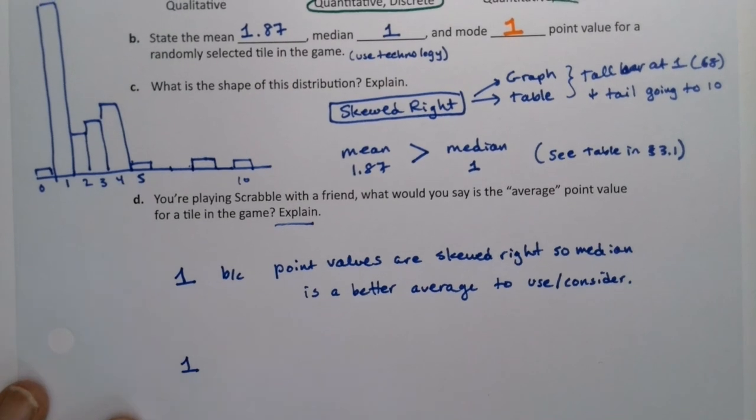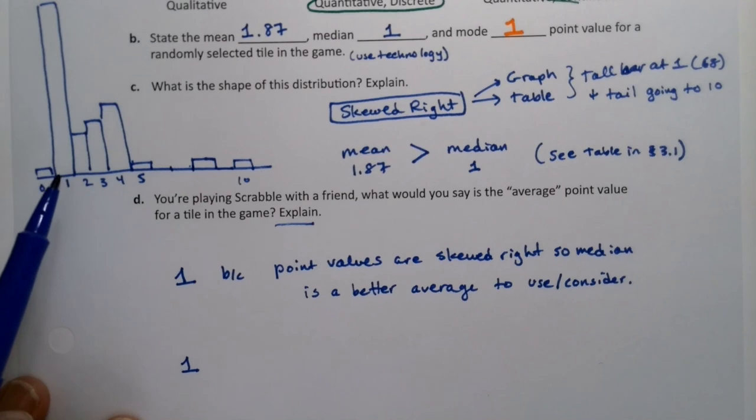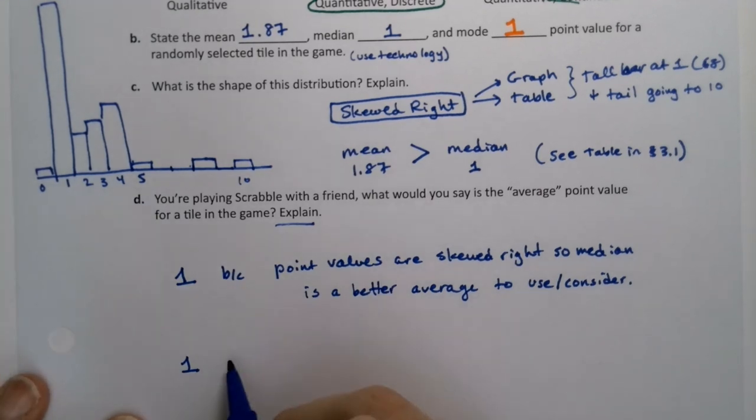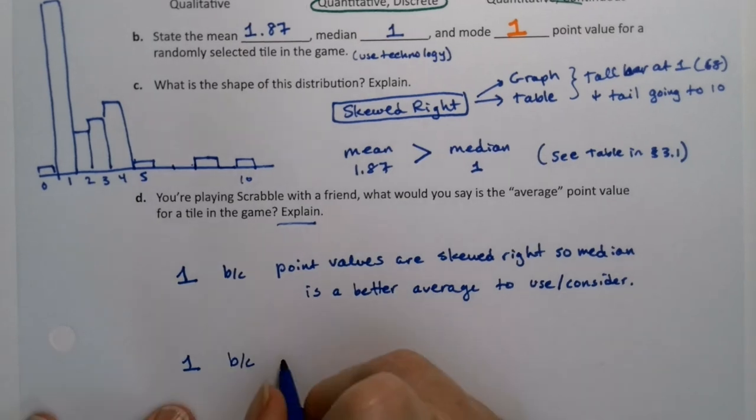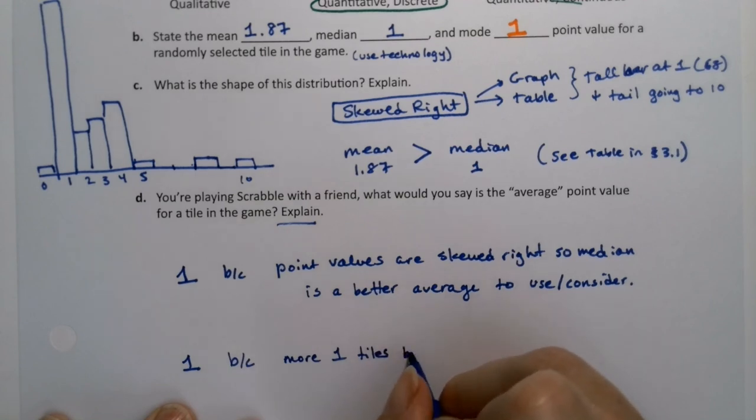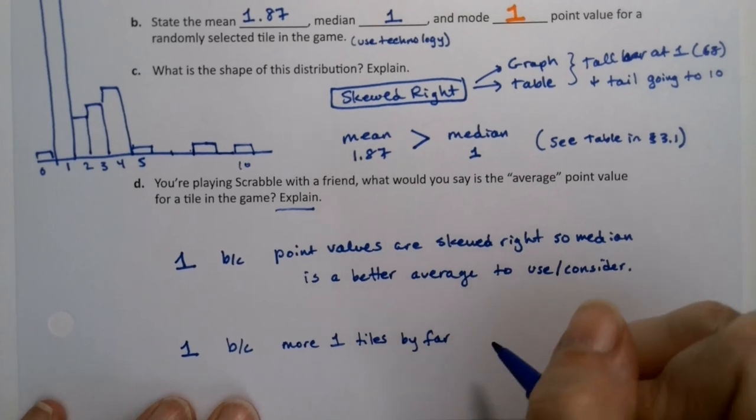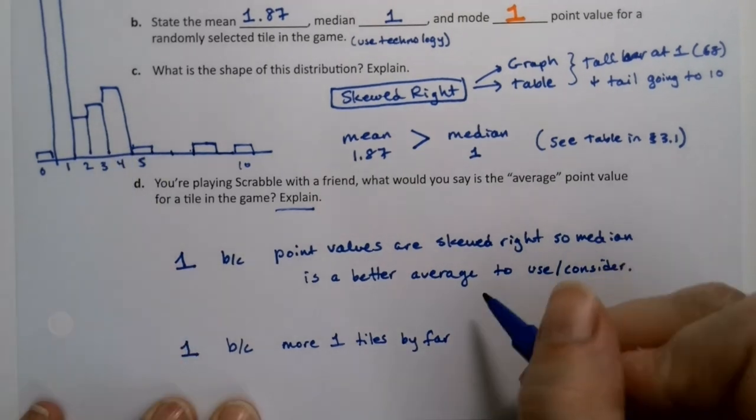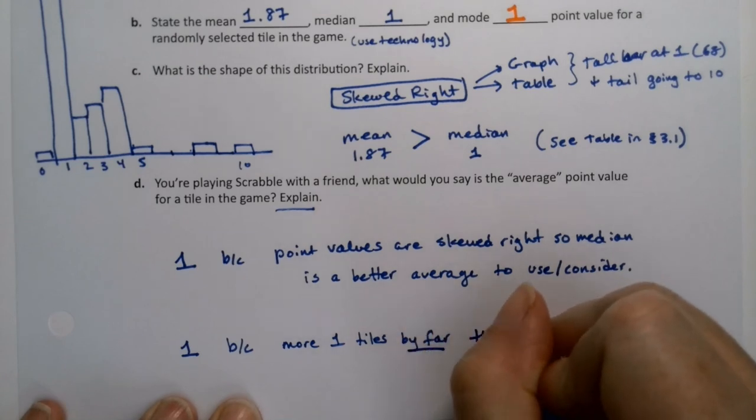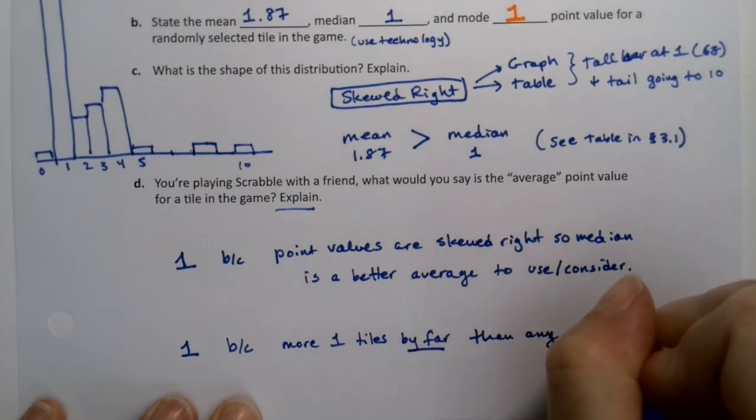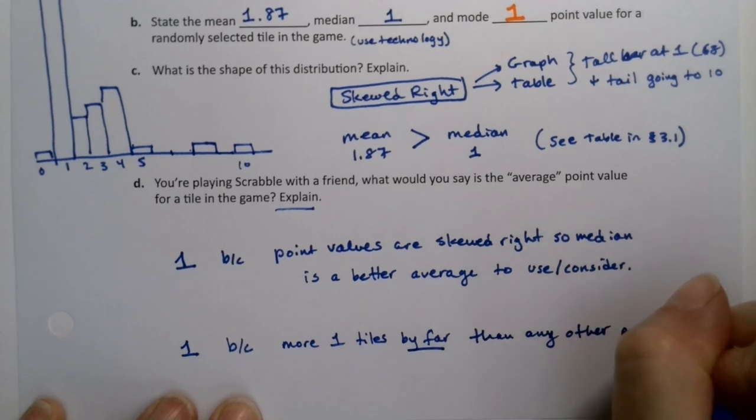So you can say one because the point values are skewed right, so the median is a better average. It's a very statistics-y answer. I do this all the time actually in classes. So the students want to know what the average test score was. And I invariably give them the median because test scores are skewed. And so the median is a fair representation of average, right? The middle value. Now, somebody else could look at this and say one, but for a different reason. I think it's kind of obvious when you look at the graph. So if you want to say, hey, what's the average point tile? Oh, one, right? Because it's the tallest. I mean, it's the most likely when you reach in to your bag or we always flipped them upside down in the box. There's more one tiles than anything else. It's honestly not even close, right? It's almost six times as much as the next competitor at four. So there's more one tiles by far than any other number.